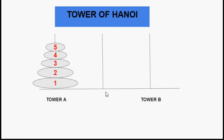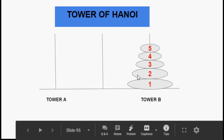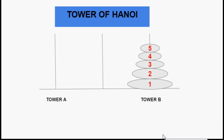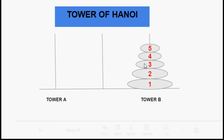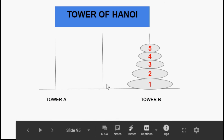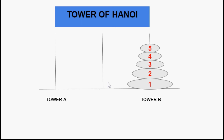Our ultimate objective is to transfer all the discs from tower A to tower B in the same order they were placed — largest at the bottom, then progressively smaller discs on top. To achieve this we need the auxiliary rod. That is why the definition mentions three rods and n discs. In the next video we will discuss how to make these transfers while following all the rules of the Tower of Hanoi problem. If you like this video, please subscribe to the channel. Thank you, bye bye.